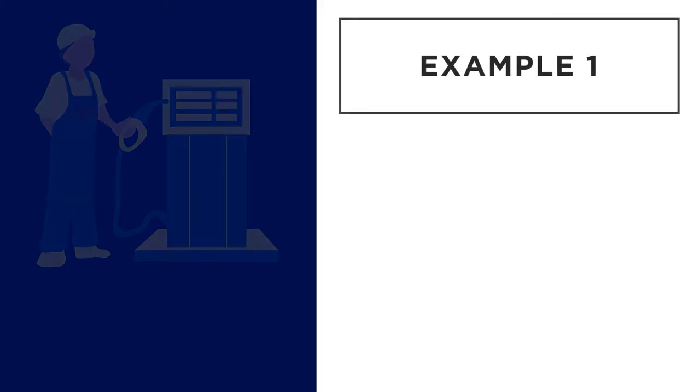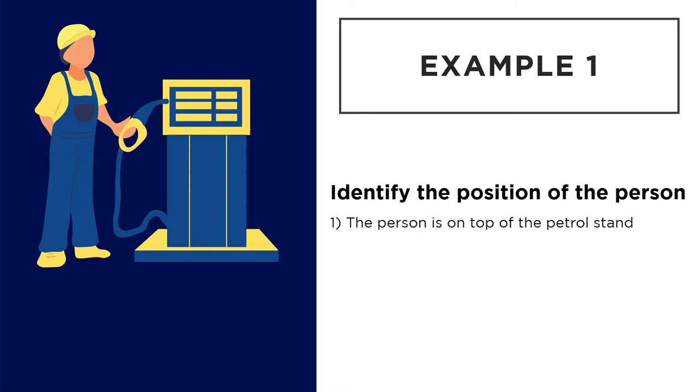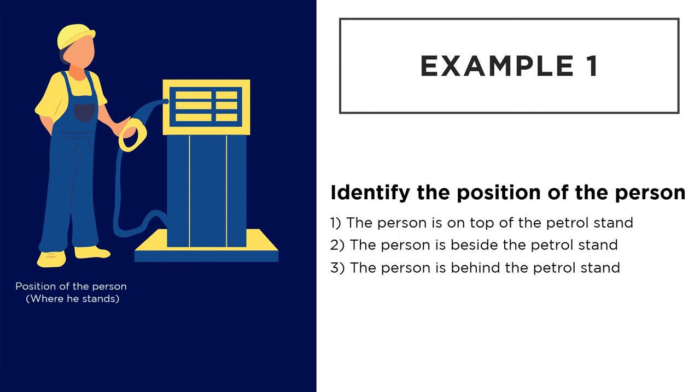For example, in this picture, the sentence could be to identify the position of the person. The options are: the person is on top of the petrol stand, the person is beside the petrol stand, the person is behind the petrol stand. From here we can see that the question is asking for the position of the person in relation to the petrol stand based on the options given.